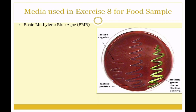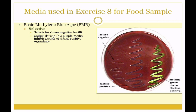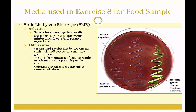For the food sample in exercise 8, you're going to be using eosin-methylene blue or EMB agar — a very pretty purple medium. It is selective, selecting for gram-negative bacilli, because the aniline dyes eosin and methylene blue inhibit the growth of gram-positive organisms but do not affect gram-negatives. This is also a differential medium; it differentiates bacteria based upon their ability to ferment lactose. Strong acid production by organisms such as E. coli from lactose fermentation will give a metallic green sheen. A weaker fermentation results in colonies with a pinkish-purple color. Organisms that cannot ferment lactose will remain colorless — the color of the medium.